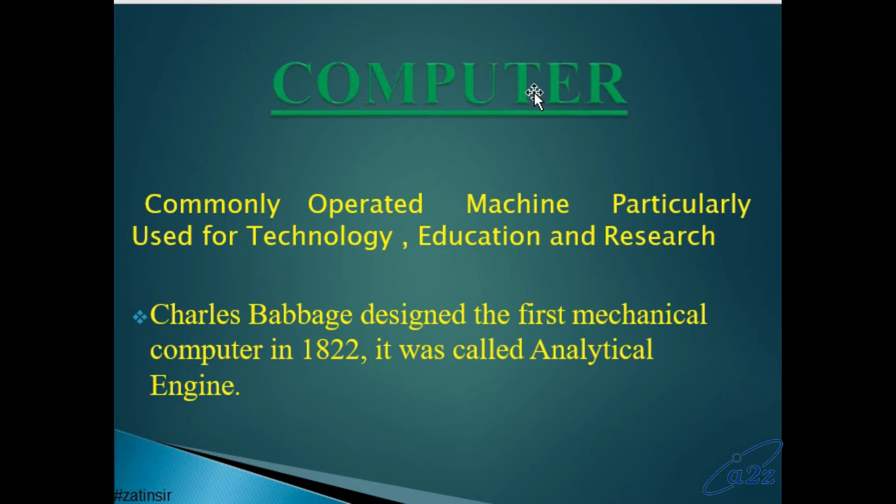Next is computer. What is a computer? The definition of computer or full form of computer is: it is Commonly Operated Machine Particularly used for Technology, Education, and Research. Commonly operated means boht regularly generally use ho raha hai. In these three areas this machine is used by many people, that is known as computer. Or also you can say that which can compute something, calculate something, usko bhi computer kehte hain.